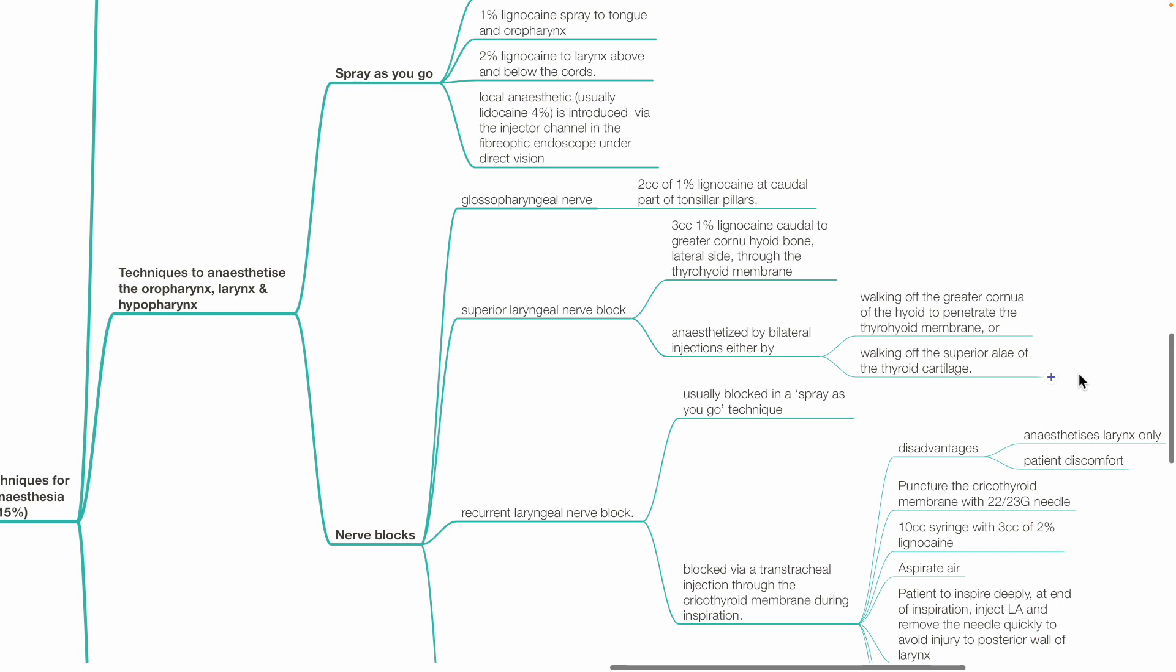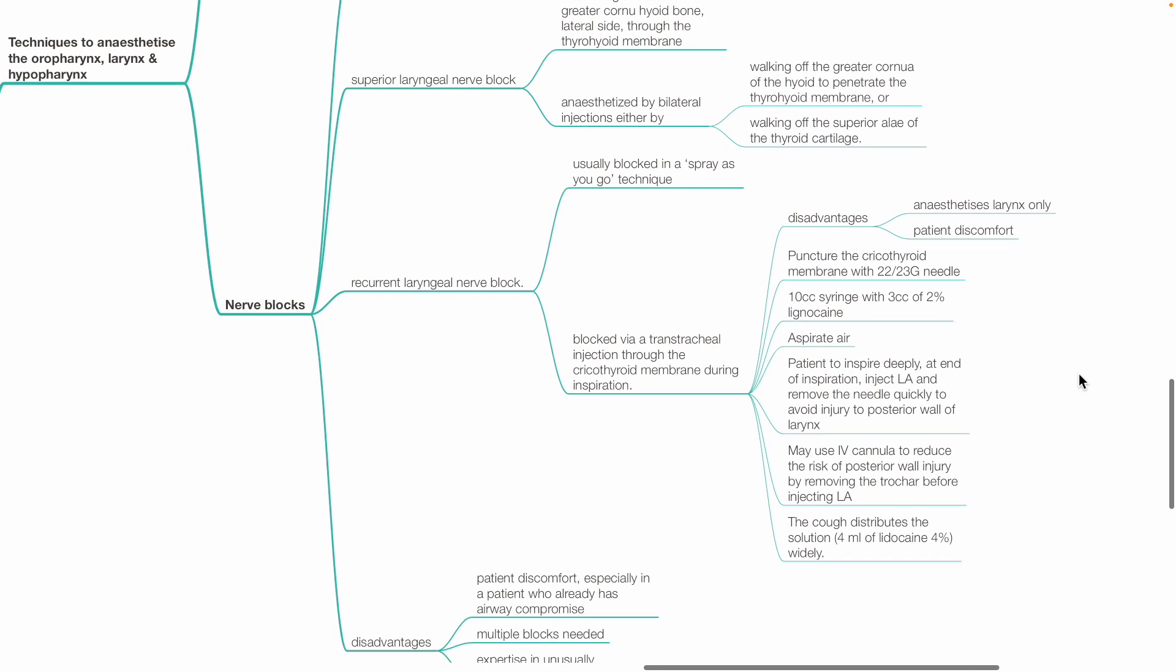The recurrent laryngeal nerve is usually blocked in a spray-as-you-go technique. It may be blocked via transtracheal injection through the cricothyroid membrane during inspiration. Puncture the cricothyroid membrane with a 22 or 23 gauge needle. Use a 10 cc syringe with 3 cc's of 2% lidocaine. Aspirate air to confirm placement in the trachea. Patient to inspire deeply. At the end of inspiration, inject LA and remove the needle quickly to avoid injury to the posterior wall of the larynx. Alternatively, use an IV cannula to reduce the risk of posterior wall injury by removing the trocar before injecting LA. The cough distributes the solution widely. Alternative is to use 4 mL of lidocaine 4%.